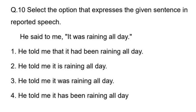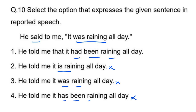Tense question: 'He said to me, it was raining all day.' This involves past perfect continuous and past continuous tenses. The correct answer uses 'had been raining' (past perfect continuous). The options are: 'is raining' (present continuous), 'was raining' (past continuous), 'has been raining' (present perfect continuous), and 'had been raining' (past perfect continuous) — which is the correct answer.